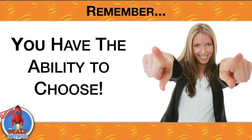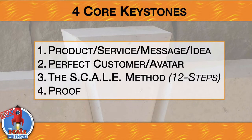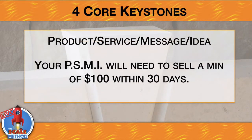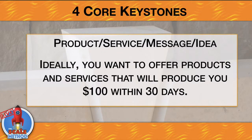You have the ability to choose because when we give you a step-by-step process, you move from one step to the other and never get lost. This is going to work as long as you have four core keystones: you need a product, service, message, or idea that you can monetize; you must know who your perfect customer and avatar is; and you need proof — make sure it's right and profitable so you can scale it. Your PSMI will need to sell at least a minimum of $100 within 30 days for this all to work.